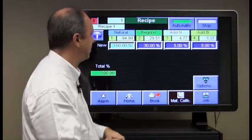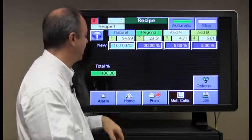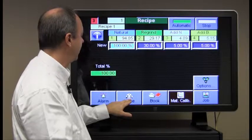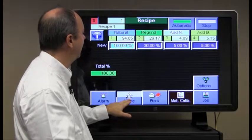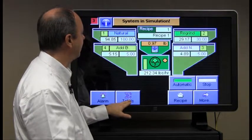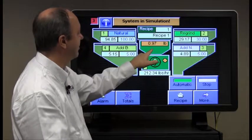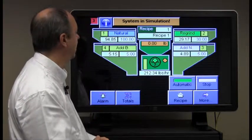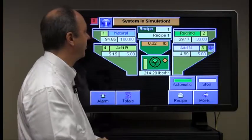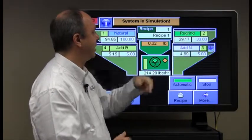So let's commit that by pressing automatic and then we can return to the home screen here and we'll watch and see the effect of the dosing order here. So the batch is completed, it's dumped out and it starts with the regrind of course, doing that first. It started with the additive natural.